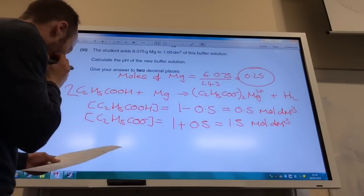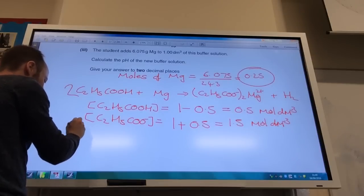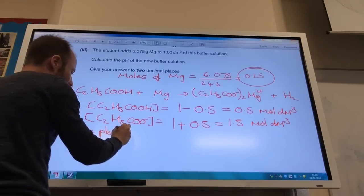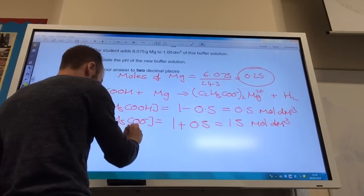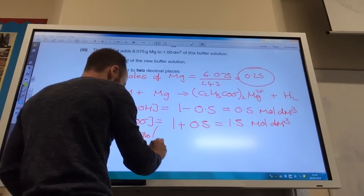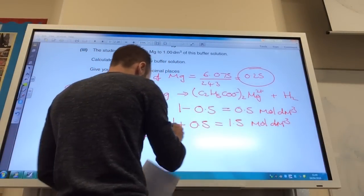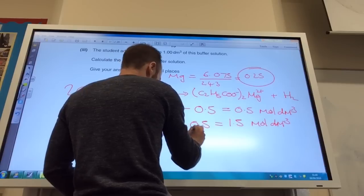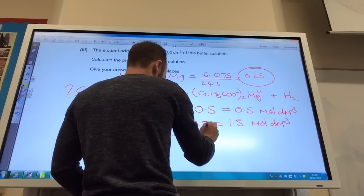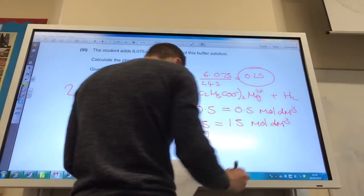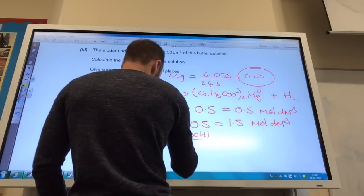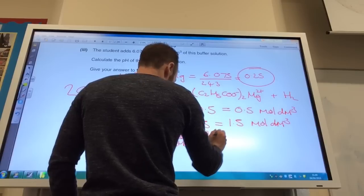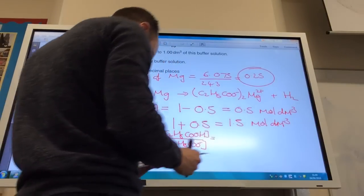So now let's bung this into our equation. So pH is equal to pKa minus log to the base 10 of the concentration of C2H5COOH divided by the concentration of C2H5COO minus.